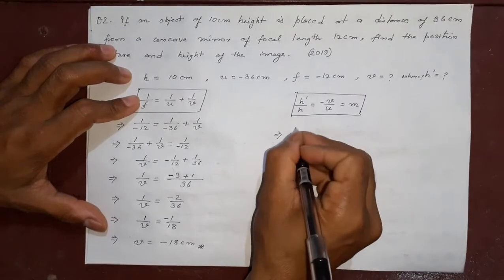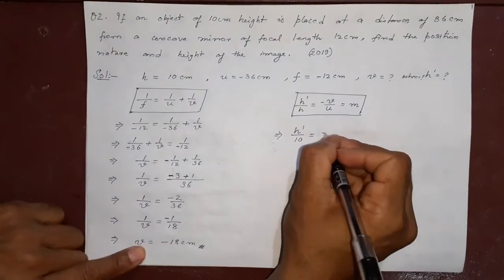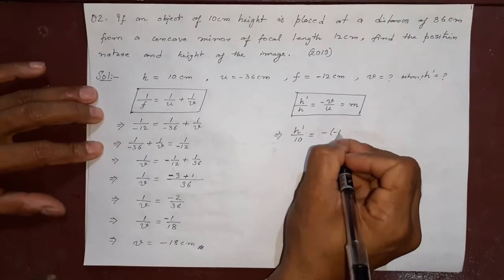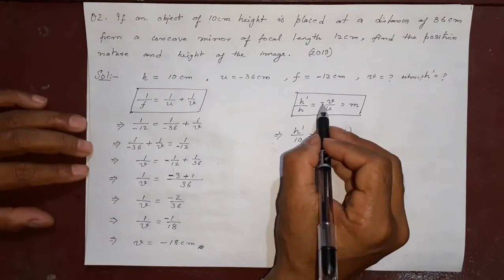Let's see what is h dash? We don't know. What is h? 10. What is v? This minus is already there, the extra minus will come from the v. v also has minus sign and this minus is already there. u is minus 36.